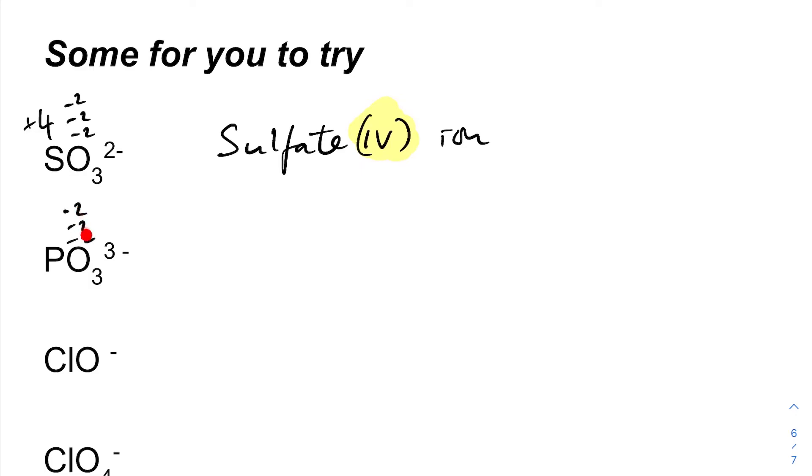Next one, again we've got three oxygens, so minus six for those three oxygens. But we need to be left with the charge of three minus. So the phosphorus must be plus three. So this is called the phosphate(III) ion.